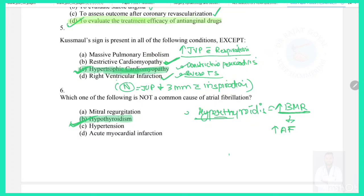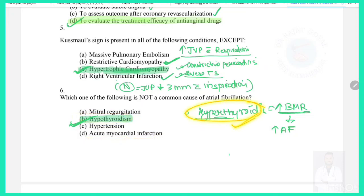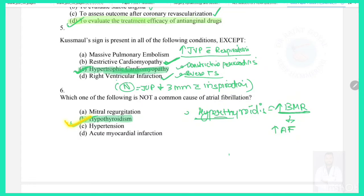Question 6: Which of the following is not a common cause of atrial fibrillation? Mitral regurgitation, hypertension, and acute myocardial infarction can all lead to atrial fibrillation. Hypothyroidism does not lead to atrial fibrillation; instead, hyperthyroidism increases BMR and leads to atrial fibrillation. So the answer is hypothyroidism.